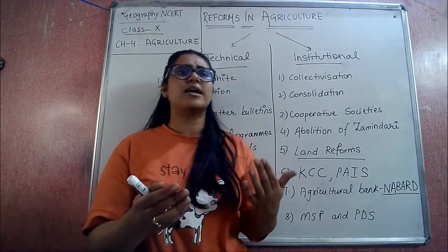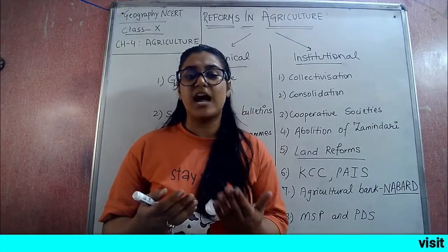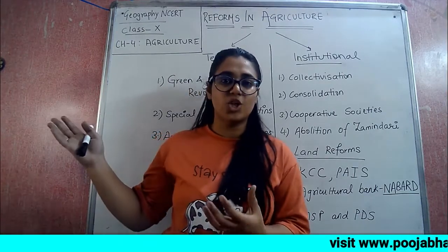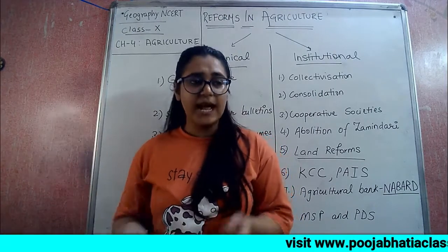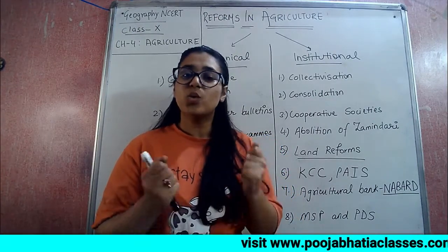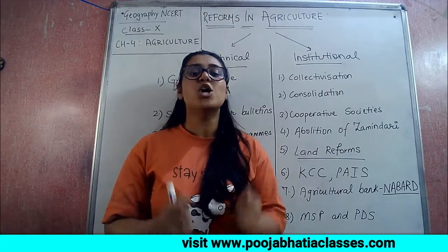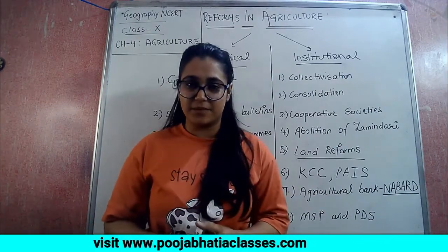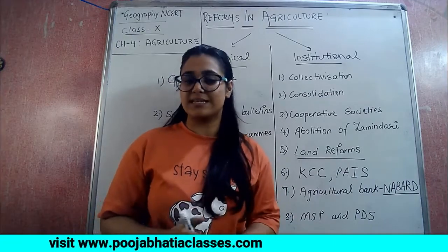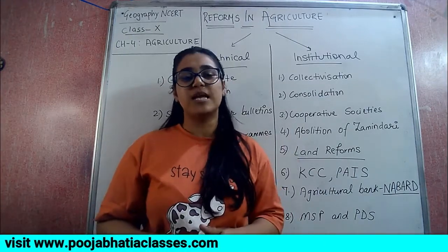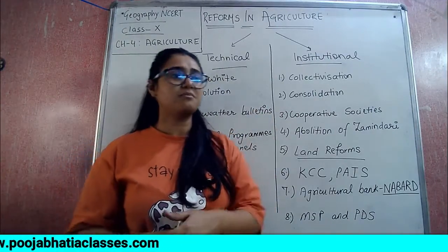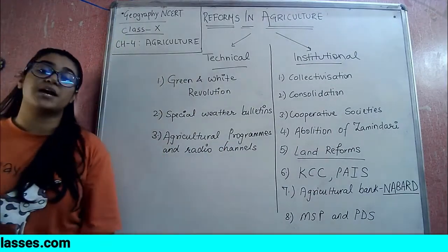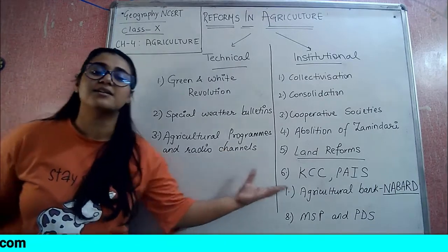India's agriculture - we see that farmers have to struggle to earn their bread and butter. Why do other countries grow so far while Indian farmers are struggling today? To solve this struggle and to make agriculture stronger, our government has taken many steps over many years. We are talking about the major reforms that have taken place in our country. There are two types of reforms: one is technical, and another one is institutional.